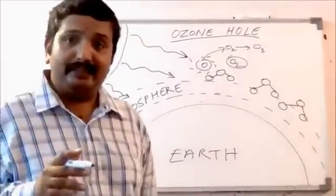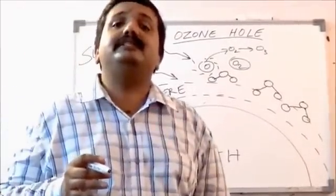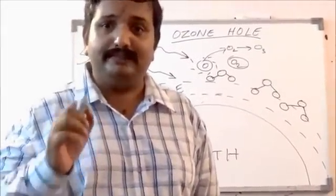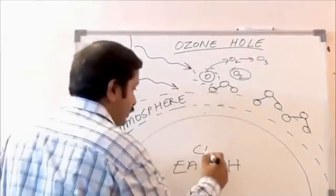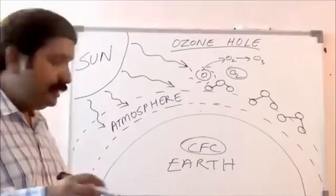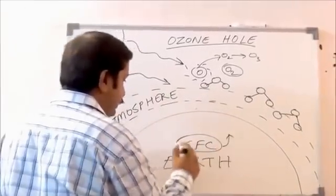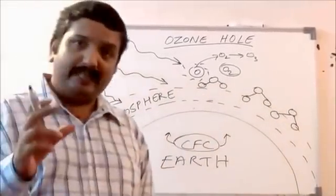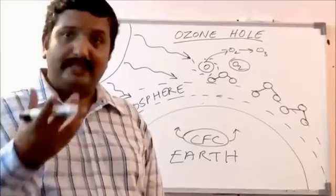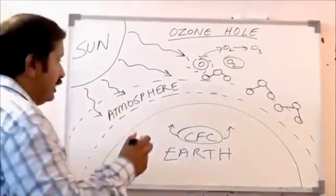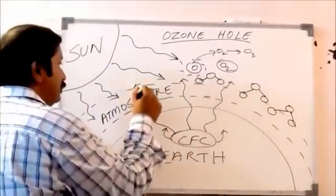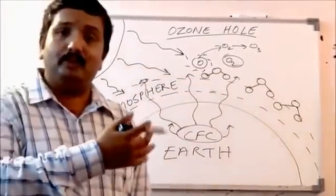The Industrial Revolution started and human beings began using specific chemicals, especially one particular chemical called chlorofluorocarbon — CFC — which not only persists in the environment but was widely used in the 1960s and 70s in aerosol cans, refrigerators, and other cooling devices. When this molecule is released, it has the habit of going and settling in the upper regions of the atmosphere, right where ozone molecules are most prevalent.